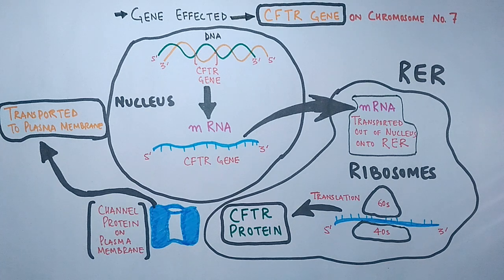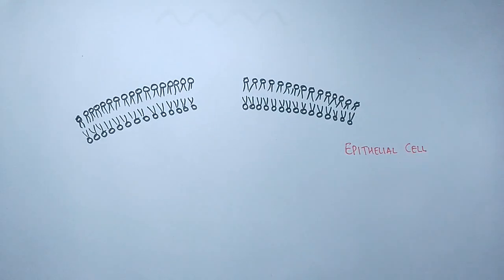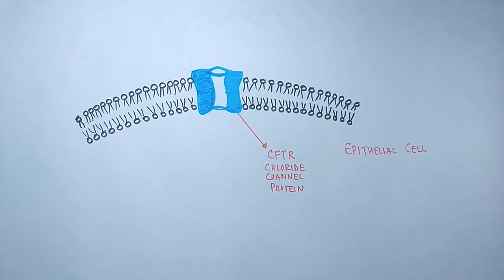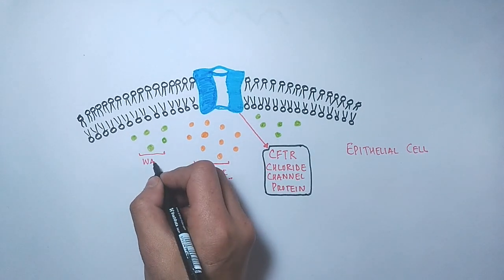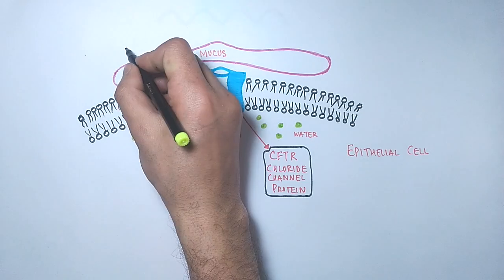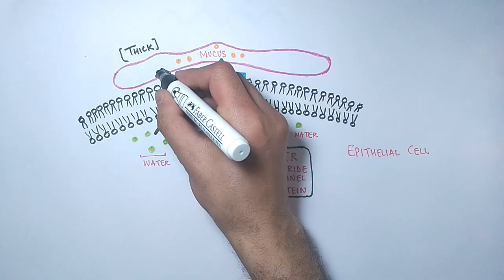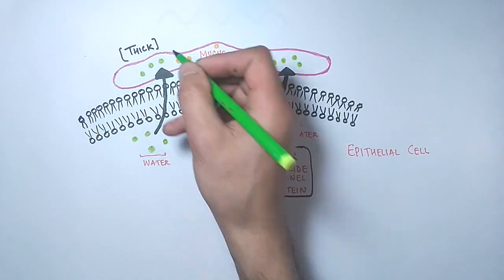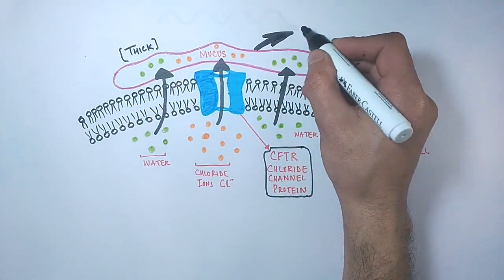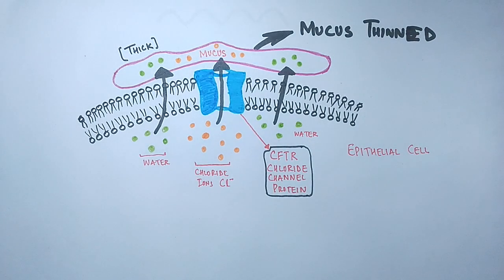These CFTR protein channels are mostly present on epithelial cells. The CFTR chloride channel protein is present in the plasma membrane, with chloride ions and water inside the cell and mucus on the outer surface. The CFTR protein transports chloride ions out of the cell, which also draws water out through osmosis, thinning the mucus on the epithelial cell surface and maintaining its proper viscosity.